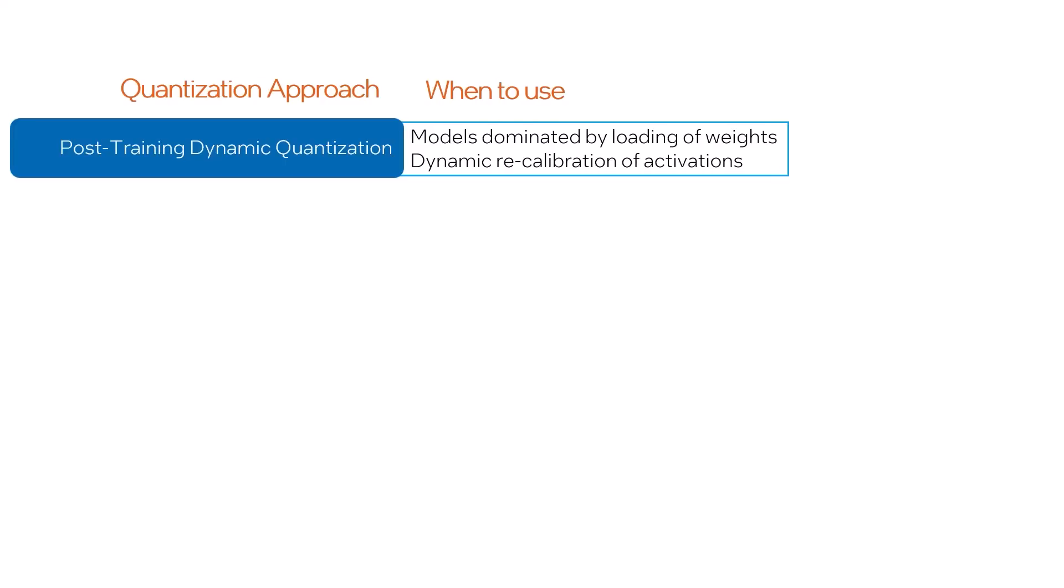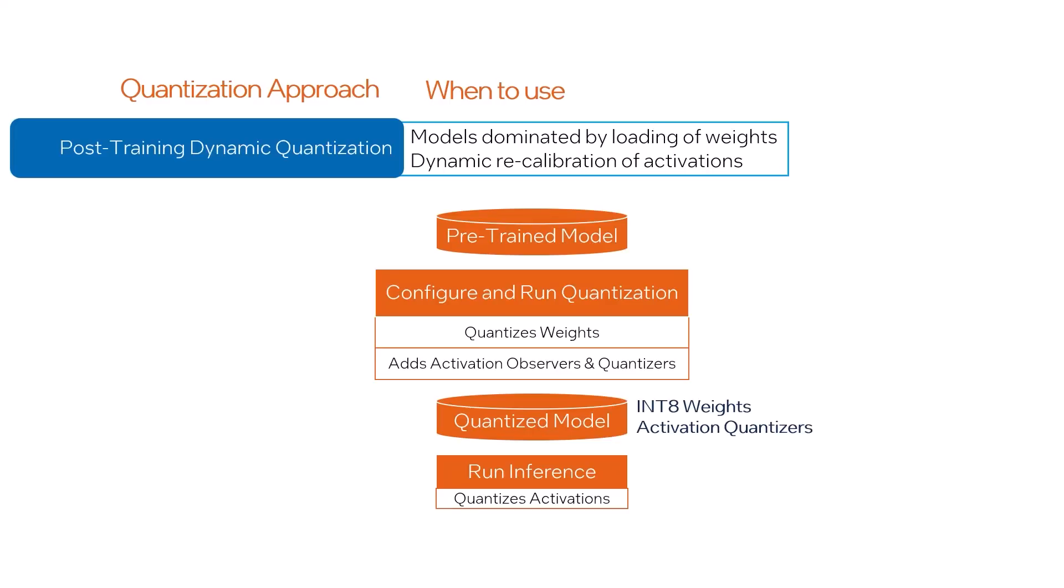Post-training dynamic quantization is simpler. It only quantizes the weights ahead of time. The activations are quantized during inference based on their ranges, so the matrix operations can be performed in int8.